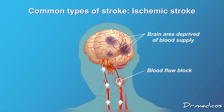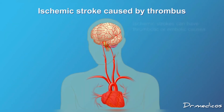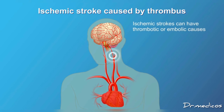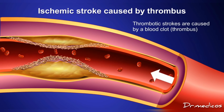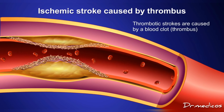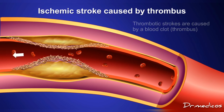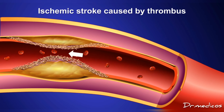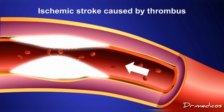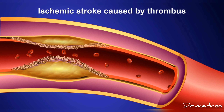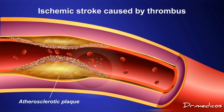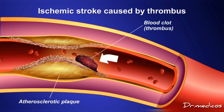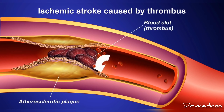Ischemic strokes can have thrombotic or embolic causes. Thrombotic strokes are caused by a blood clot, medically termed a thrombus, in an artery supplying blood to the brain. Blood clots usually form in arteries affected by atherosclerosis — the buildup of hardened plaques on the inner walls of arteries. If an atherosclerotic plaque is disrupted, a thrombus forms on top of it and blocks the vessel, stopping the flow of blood.